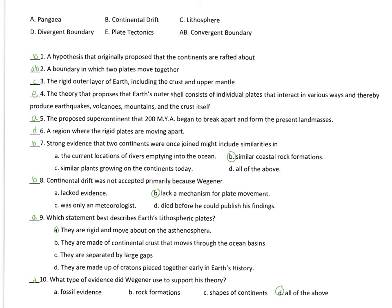Strong evidence that two continents were once joined might include similarities in similar coastal rock formations. Remember that the Appalachian mountain chain that goes from Georgia all the way up to Maine would link up very nicely with the Caledonian mountains in northern Europe. So, get rid of the Atlantic Ocean, put it back together like a puzzle piece, and boom, you'll see where those mountains line up. Go back and check your notes if you don't know what I'm talking about.